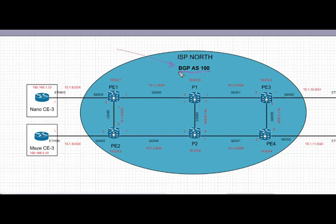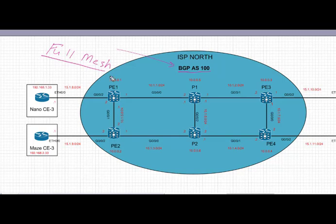Welcome back to the iOS XR series. Today we're going to configure BGP in our topology in ISP North. We're going to use a full mesh of BGP in our first example, without using route reflectors, peer groups, or session groups, to simplify and understand how BGP config differs in iOS XR compared to iOS and iOS XE.